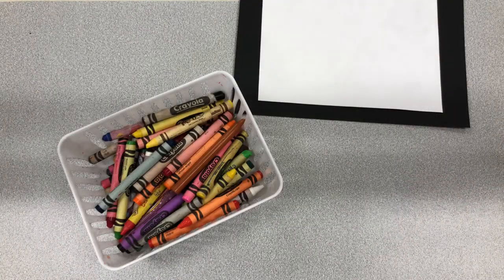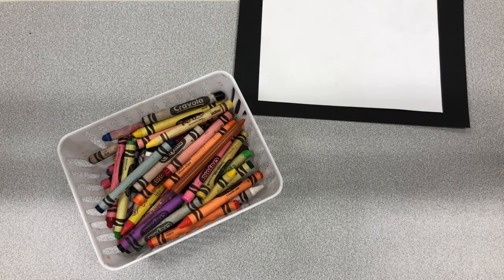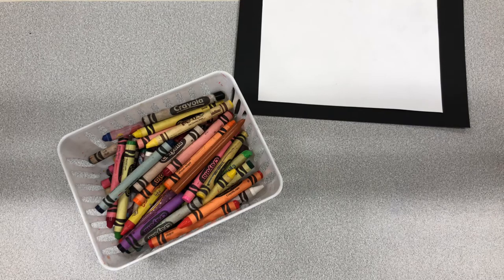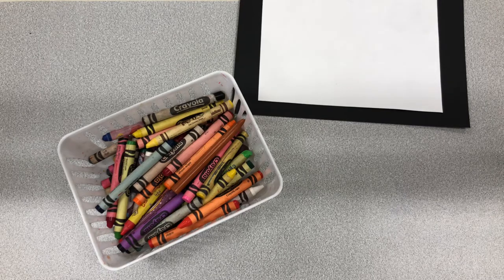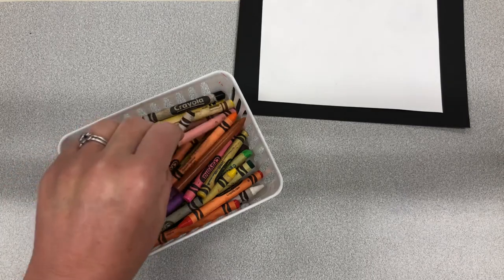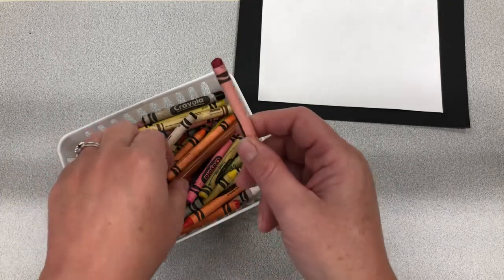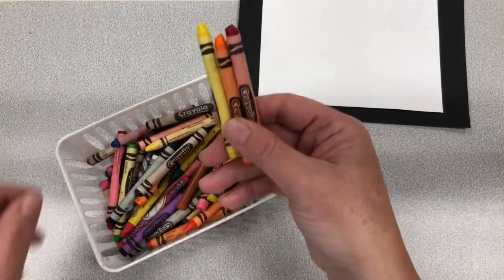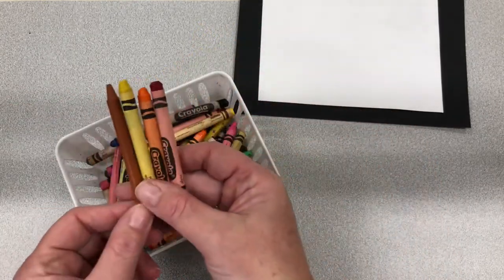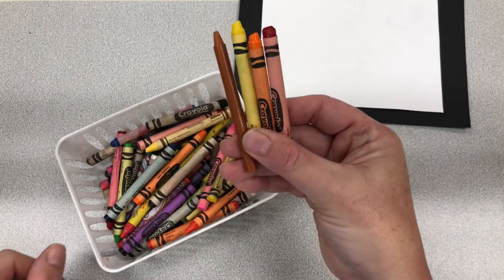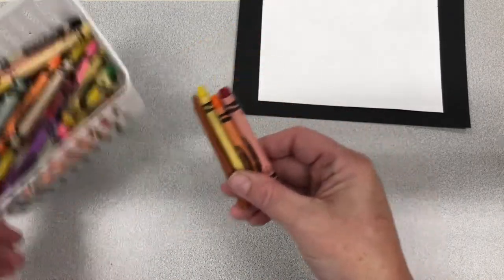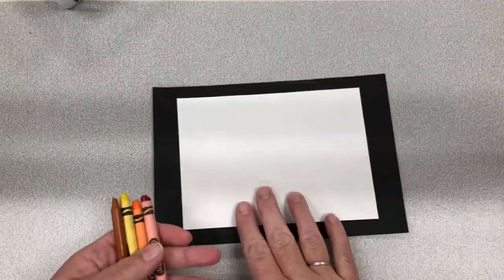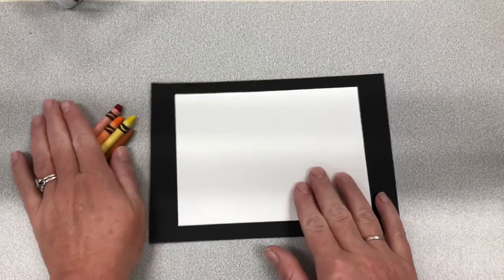Now let's pick out our warm colors for our warm color fall landscape drawing. Warm colors are the first three colors in the rainbow: reds, oranges, and yellows. Sometimes browns are also considered warm colors, so we're going to pick out some browns. The first thing we want to do is figure out where our treetops are going to go.